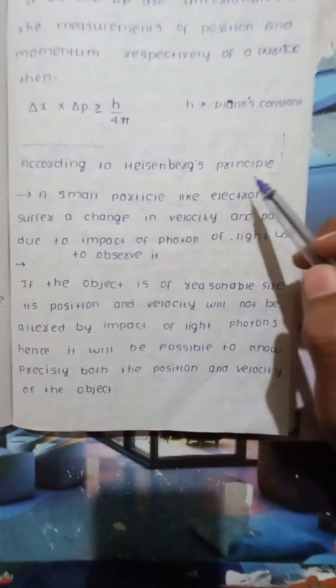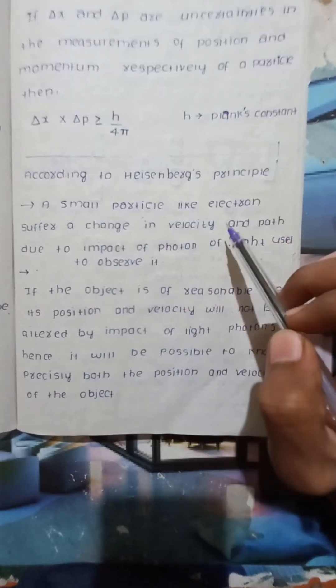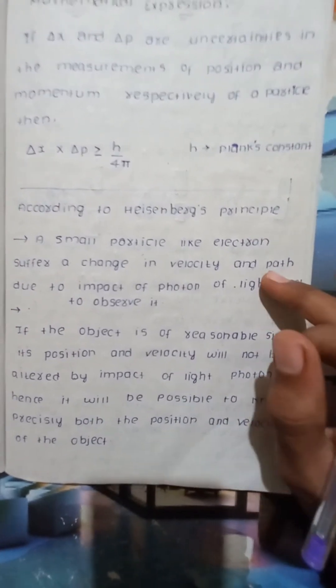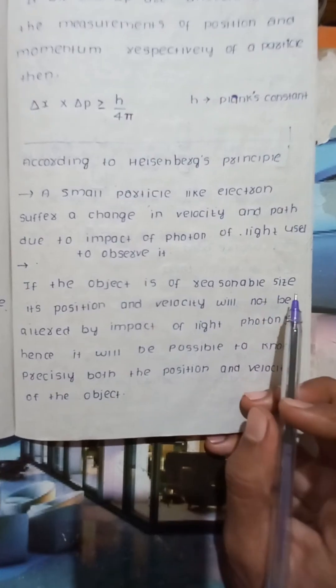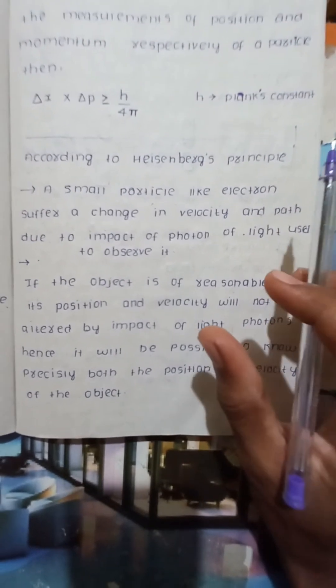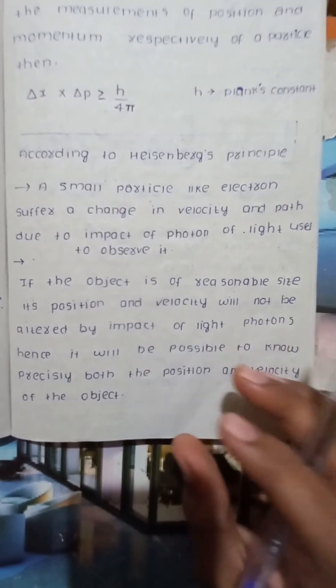A small particle like an electron will suffer a change in velocity and path due to the impact of a photon of light used to observe it. This principle means small particles like electrons suffer a change in velocity due to the impact of a photon. If the object is of reasonable size, its position and velocity will not be altered by the impact of light photons. Hence, it will be possible to know precisely both the position and velocity of the object.